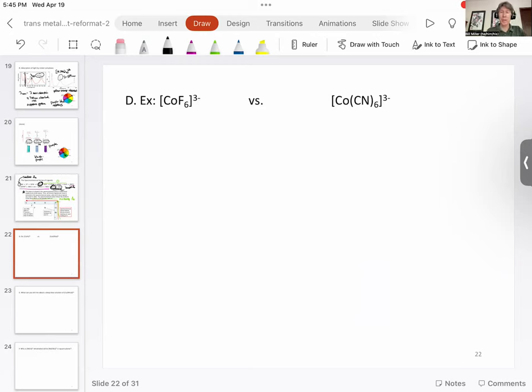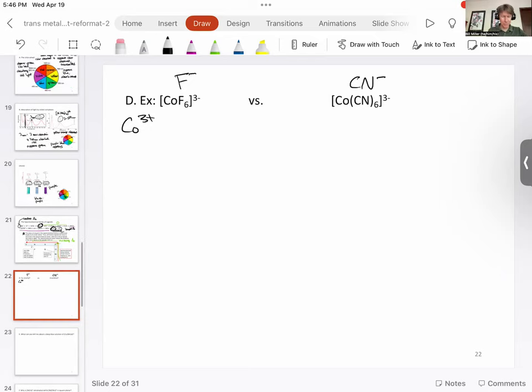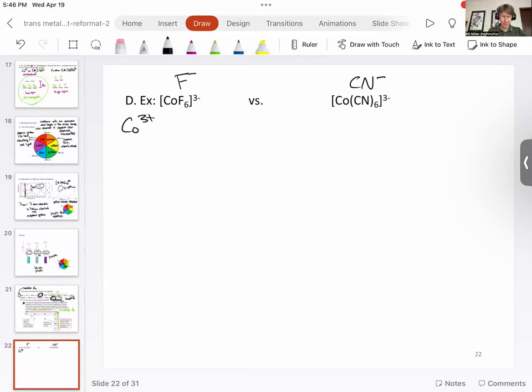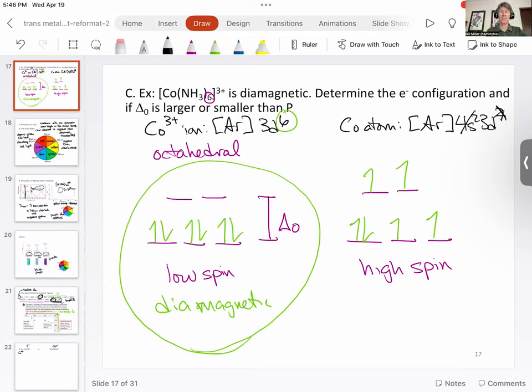So we're going to compare these two transition metal complexes. This has got F minus in it, and this has got cyanide minus. Each of those has six ligands, so each of those is going to have cobalt 3 plus. We've worked with cobalt 3 plus before, and we saw that the electron configuration for cobalt 3 plus was argon 3D6.